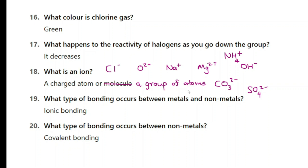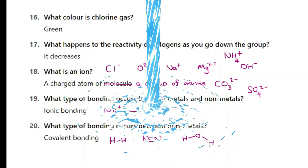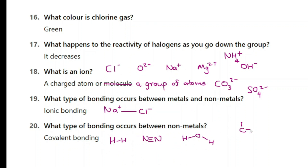Question 19: what type of bonding occurs between metals and non-metals? The answer is ionic. Sodium plus binds with chloride minus to produce sodium chloride — this is ionic bonding. What type of bonding occurs between non-metals? Covalent bonding. For example, the bond between two hydrogen atoms, the triple bond between two nitrogen atoms, and in a water molecule H₂O the OH bonds are covalent. In methane there are four covalent bonds. All of these are between non-metals and are covalent structures.